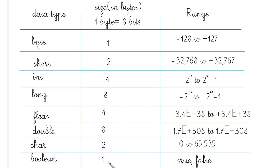There is a pattern here to help you remember — just don't mix up the order. The order is byte, short, int, long, float, double, char, boolean. A memory hack: BSIL for byte, short, int, long, with sizes 1, 2, 4, 8. Then float and double are 4, 8, and char and boolean are 2, 1. So the pattern is 1, 2, 4, 8, 4, 8, 2, 1.